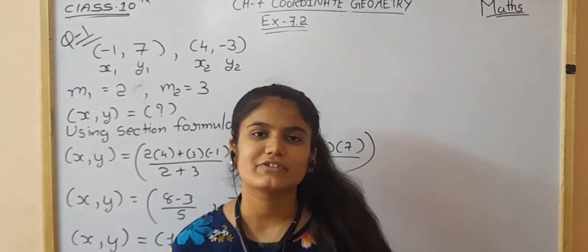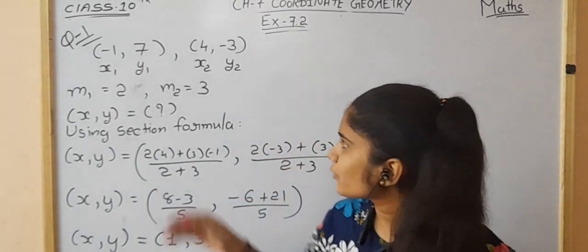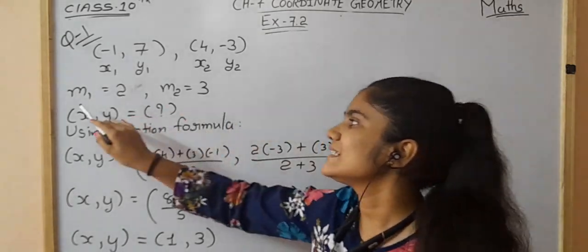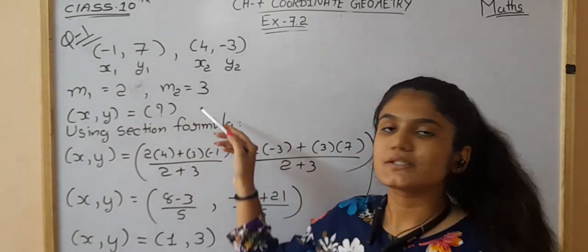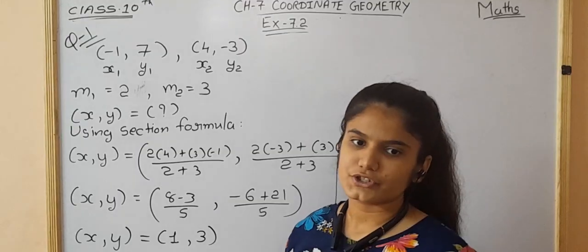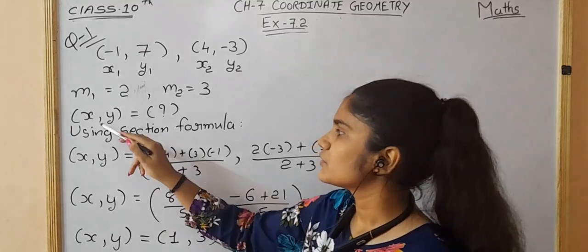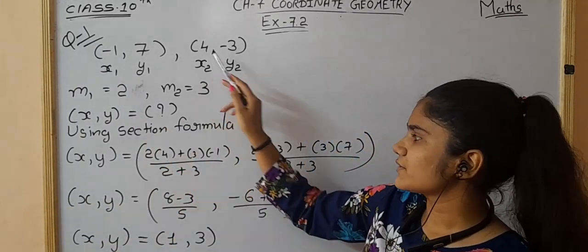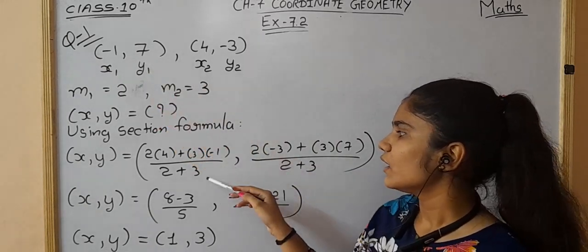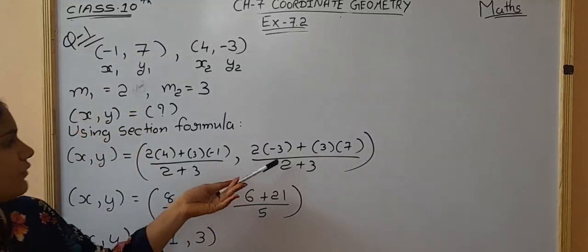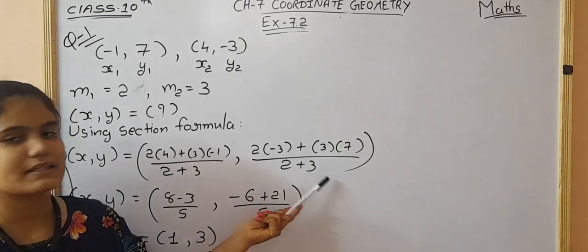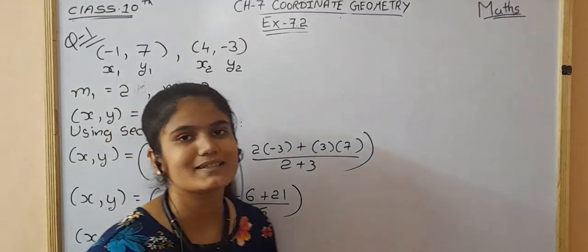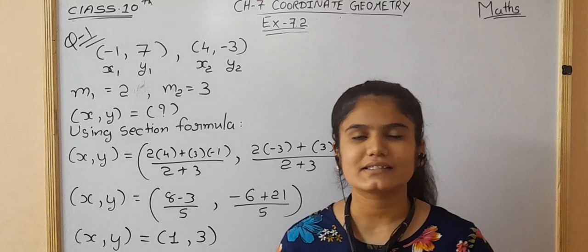Starting Exercise 7.2, Question 1. Two points are given with coordinates x1, y1 and x2, y2. The ratio of division is 2:3, so m1 equals 2 and m2 equals 3. We have to find the coordinates at which this ratio is divided using the section formula. Substituting: 2 into 4 plus 3 into minus 1 upon 2 plus 3, and 2 into minus 3 plus 3 into 7 upon 2 plus 3, which gives the coordinates of P as (1, 3).